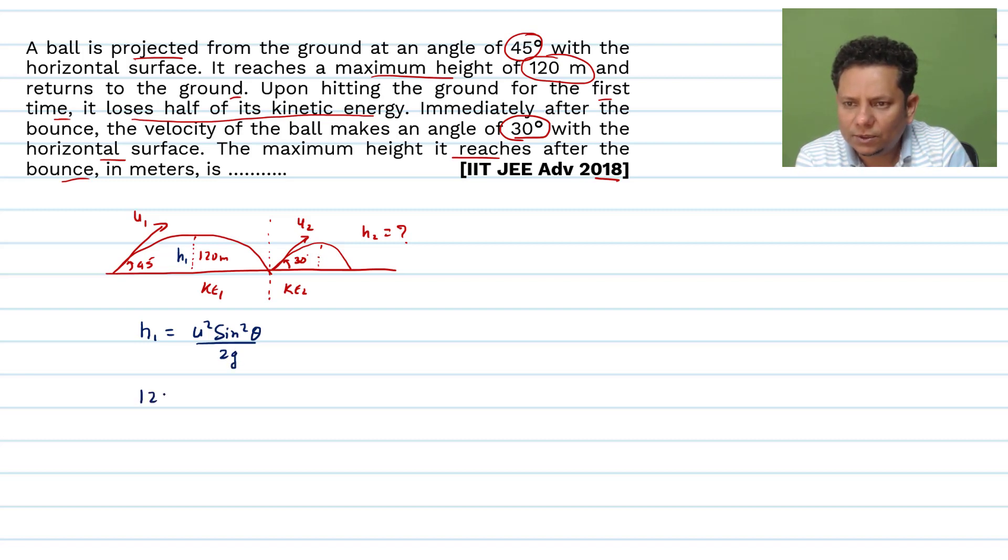h1 here is 120 meters, will be equal to u1 squared sine squared 45 divided by 2g. So this implies u1 squared.